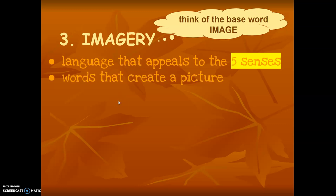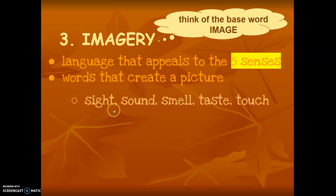We want to think about how the author used his words to create a picture — something that I could visualize. I could visualize the sound of the storm or the sight of the sunset based on the language that he uses in his poem. So we're talking about sight, sound, smell, taste, and touch.